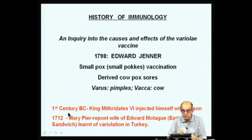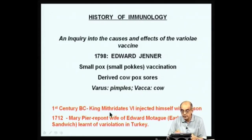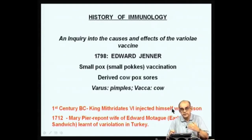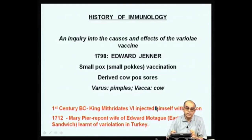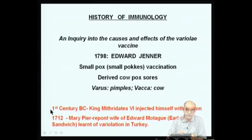Before this, a brief reference: in the first century BC, King Mithridates actually injected himself with increasing doses of poison to avoid being killed by a murderer who might poison him later. The ironical part of this story is that when he got depressed and wanted to commit suicide by taking poison, the poison had no effect on him.